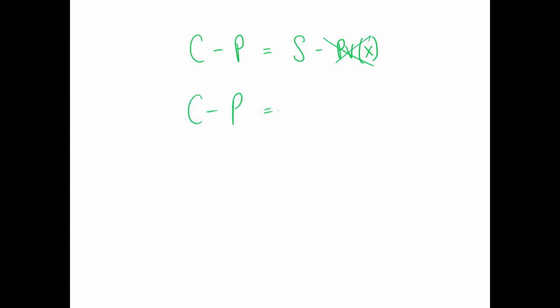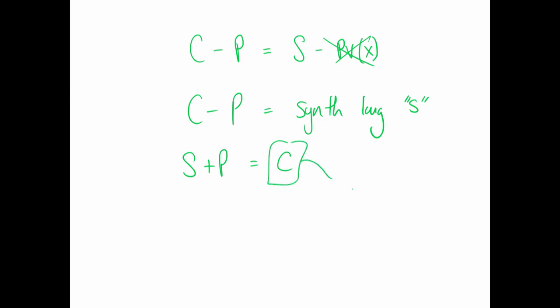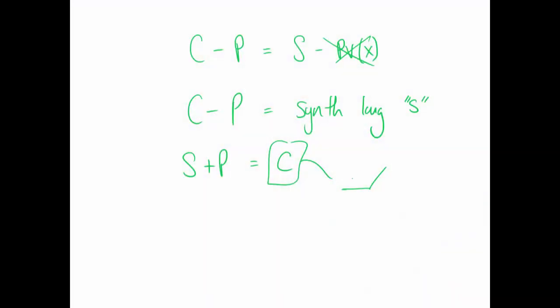Simplifying, C minus P is a synthetic long — it synthesizes exposure to the underlying asset. When you think of a protective put as S plus P, you can rearrange to show it gives essentially a long call-like exposure. A protective put is like a long call, so we're going to end up with a positive delta.